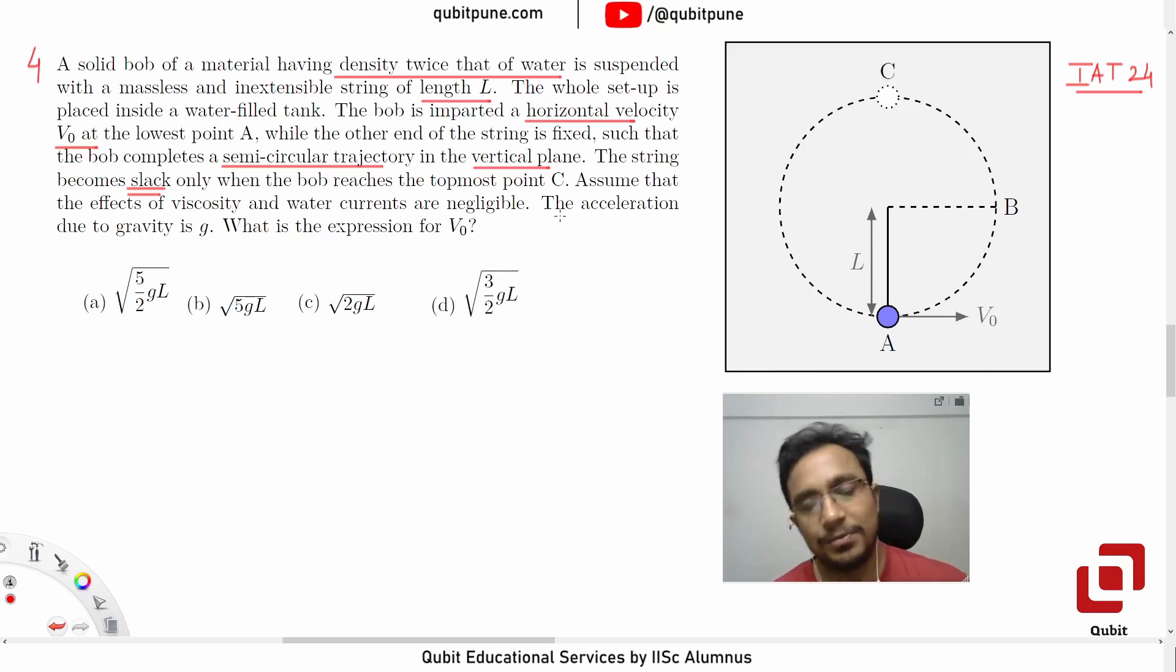Four options are there. Four options have root 2, root GL. We know that is dimensionally equal to speed: 5 by 2, 5, 2, or 3 by 2 inside them.